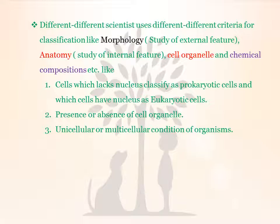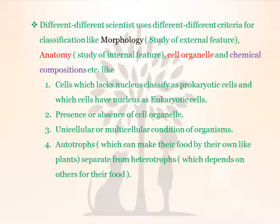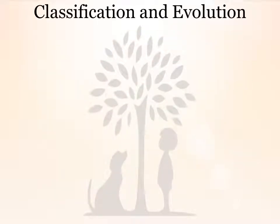Other classification criteria include the presence or absence of cell organelles, unicellular or multicellular condition of the organisms, and whether the organism is an autotroph or heterotroph. Autotrophs are those organisms which prepare their own food, and heterotrophs depend on other organisms. The presence or absence of a cell wall is another criterion of classification.